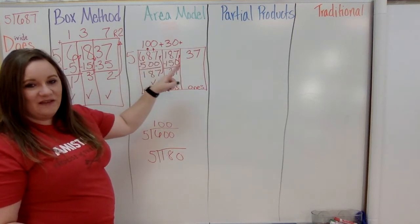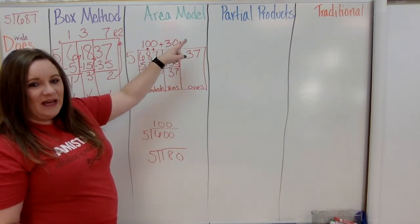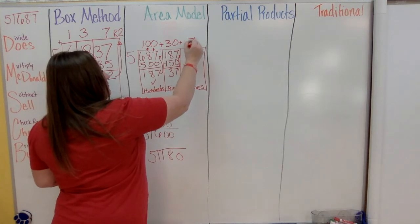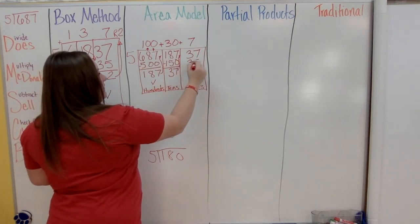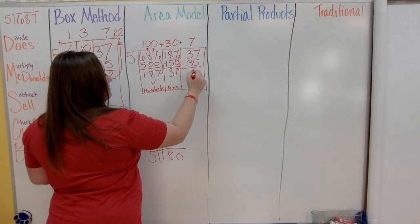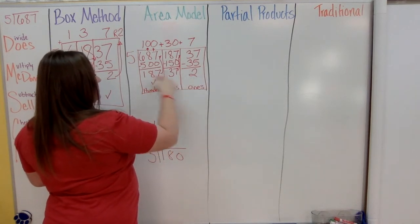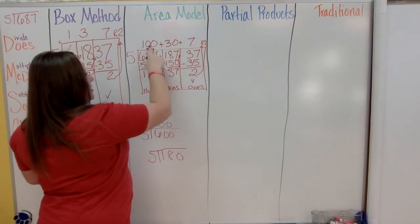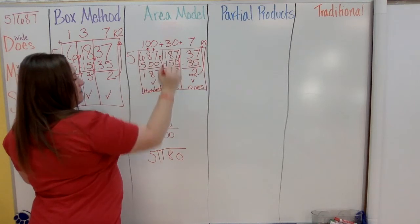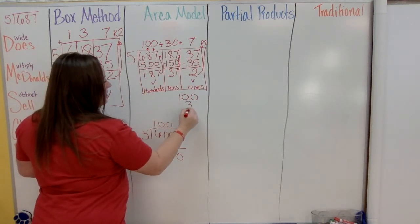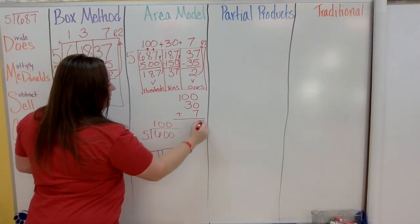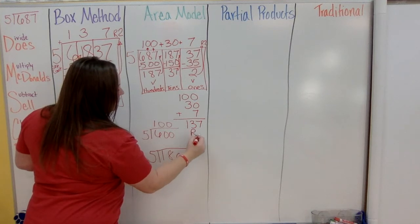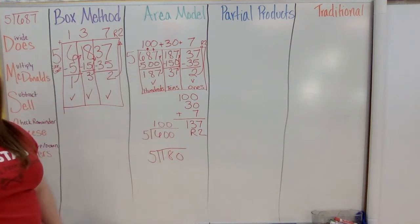8 times 5 is 40 — that's too big, so go back to 7. Seven times 5 is 35. Subtract: 37 minus 35 is 2. Check the remainder: it's less than 5, so we're done. Bring up the remainder of 2. Now add the three numbers on top: 100 + 30 + 7 gives you 137 remainder 2. That's how you do the area model.